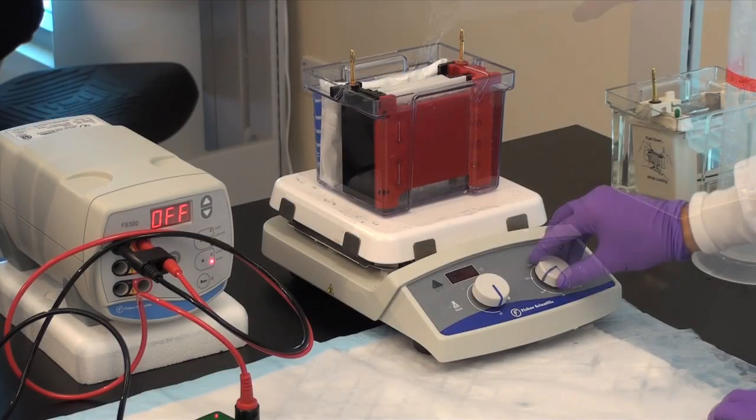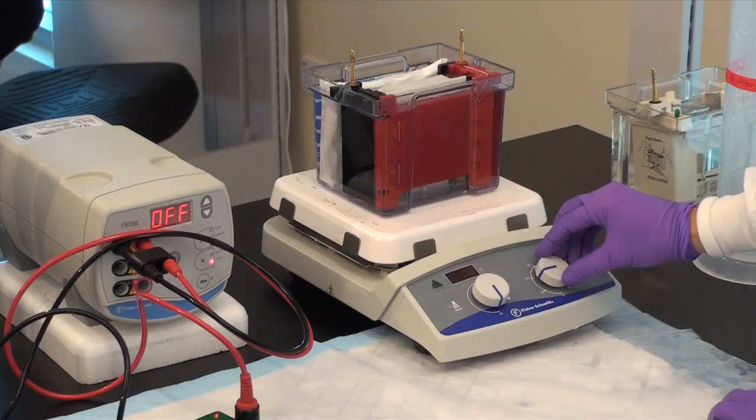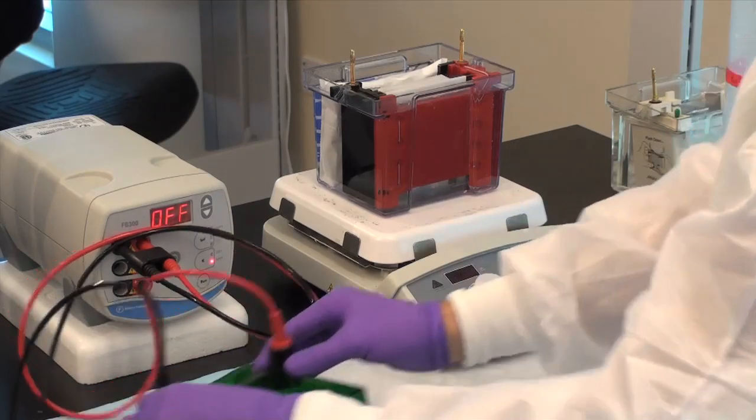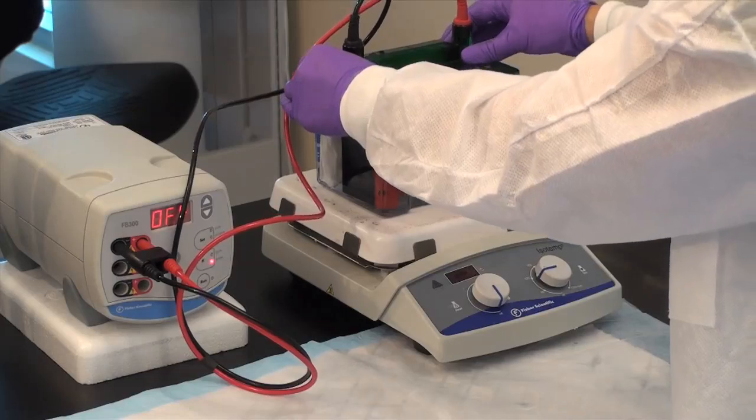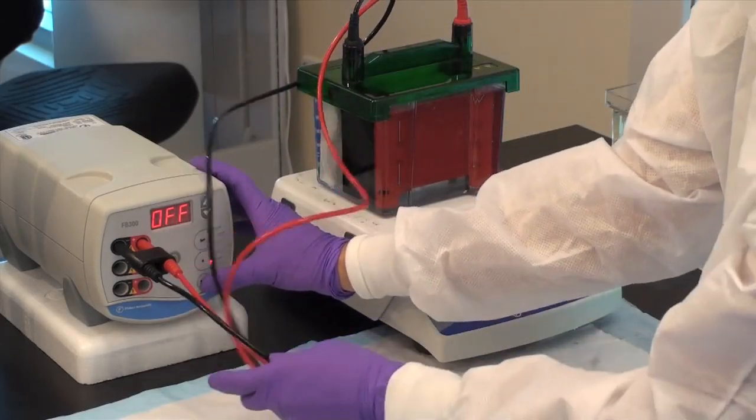Place the tank on a stir plate and set the stir feature to a low setting to circulate the buffer and keep it evenly cool throughout the transfer. Secure the top of the tank and turn on the power supply. The transfer should take about one to two hours.